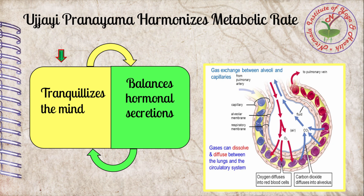About 30% of air remains in the trachea and upper air passages as dead air and does not move to the alveoli for gaseous exchange during the breath cycle. With ujjayi practice, the exchange of gases across the alveolar membrane increases and the rate of the breath cycle decreases. Deep and intense concentration on breath tranquilizes the mind and induces inner calmness.